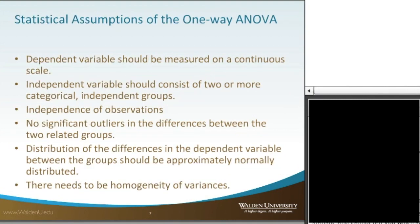With all statistical tests, we have our list of assumptions. We start with the dependent variable, because for those who are new to statistics and trying to figure out what statistical tests to run to answer research questions in doctoral research, focus on the dependent variable first — it will align you to which statistical tests to use. For the one-way ANOVA, the dependent variable should be measured on a continuous scale. The independent variables should consist of two or more categorical independent groups — generally three or more, since when you have two you would just do a t-test. There should always be independence of observations from each of the data points and participants.